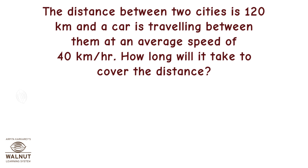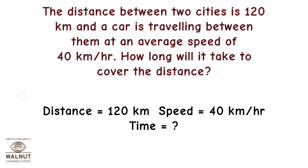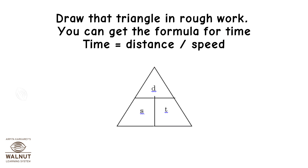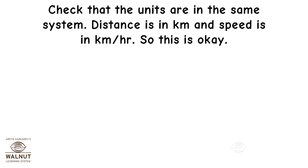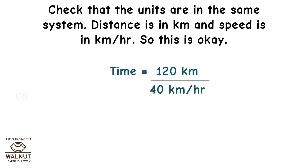The distance between two cities is 120 km and a car is travelling between them at an average speed of 40 km per hour. How long will it take to cover the distance? Distance = 120 km, Speed = 40 km/h, Time = unknown. Using the triangle: Time = distance ÷ speed. Distance is in kilometers and speed is in km/h, so the units are compatible. Time = 120 km ÷ 40 km/h. Therefore, the car will take 3 hours.